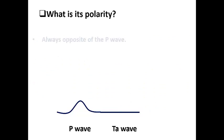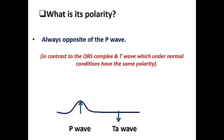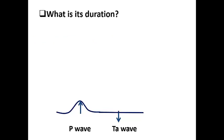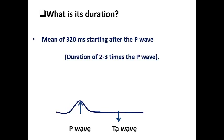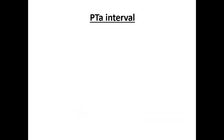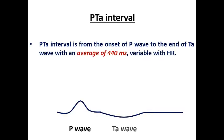Regarding polarity: the TA wave is always opposite to the P wave — in contrast to the rule applied in the ventricle, in which the QRS complex and T wave have the same polarity. So the TA wave is always opposite to the P wave. Regarding duration: it is about an average of 320 milliseconds starting after the P wave, which is about twice or triple the P wave duration. So if it is opposite to the P wave and has twice or triple the duration, it appears as a negative deflection following a positive P wave, with twice or triple the P wave duration. This gives rise to another terminology: the PTA interval.